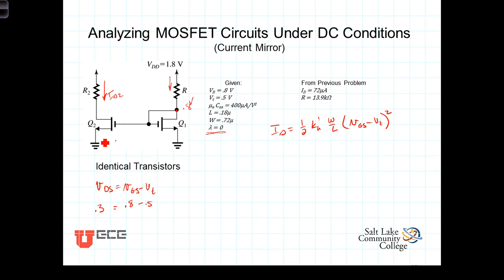We're now prepared to calculate R2. We know the voltage here, VDS, with S grounded, is 0.3 volts.